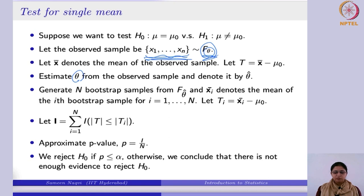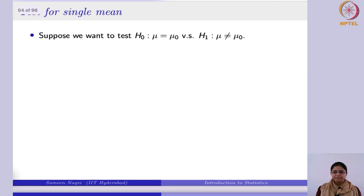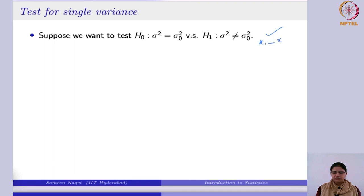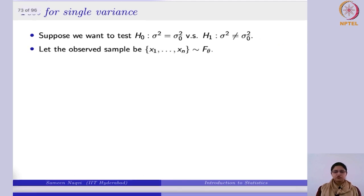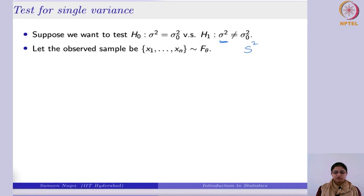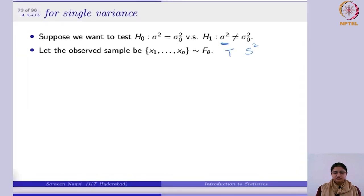Likewise, if you change from population mean to variance, then also you can perform the test for single variance. This is sigma-naught squared. You are going to take a sample coming from some known distribution other than normal. Since it is about variance, you will be calculating the sample variance, and your t will be that sample variance minus the hypothesized value.